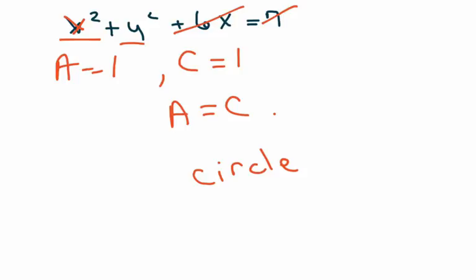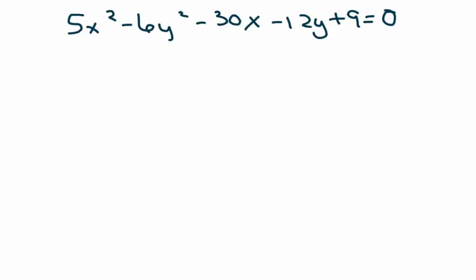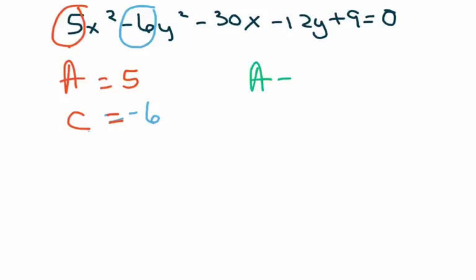Okay, next one. Our A is five, our C is negative six. So we notice that A does not equal C. Now if they have the same signs it's an ellipse, but these signs are different. My A is positive and my C is negative, so that means it's a hyperbola.